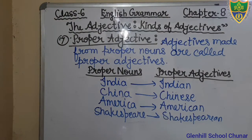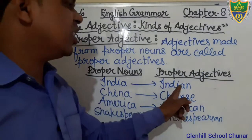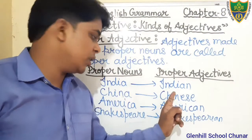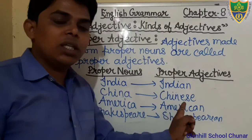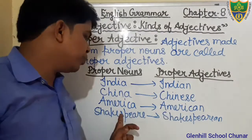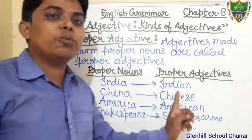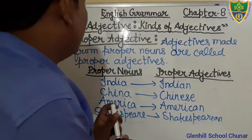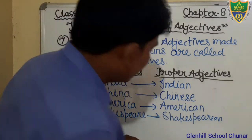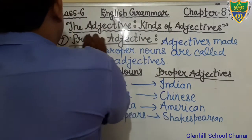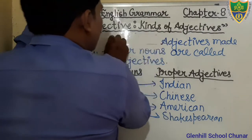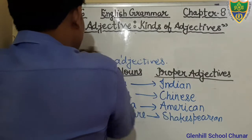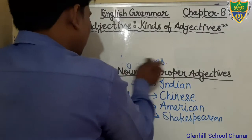So to summarize: India is a Proper Noun, Indian is a Proper Adjective. China is a Proper Noun, Chinese is a Proper Adjective. America is a Proper Noun, American is a Proper Adjective. Shakespeare is a Proper Noun, and Shakespearean is a Proper Adjective. You may also write examples. I hope you have written — I am going to erase it.